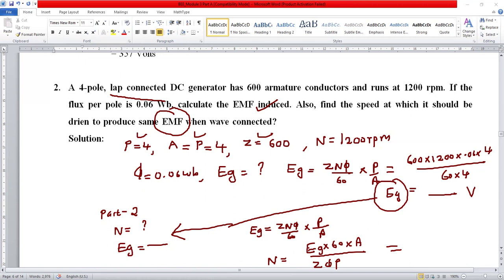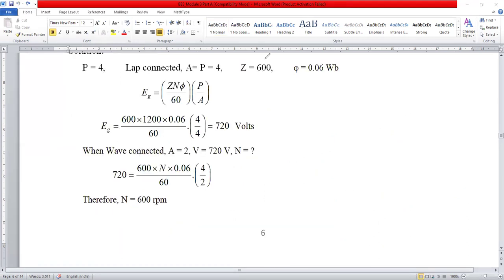Please work by yourself and later you can see the solution. In the first case, the generated EMF equals 720 volts. Using 720 volts as the generated EMF, the speed has been reduced to 600 RPM. Earlier the speed was 1200 RPM, now the new speed is 600 RPM.